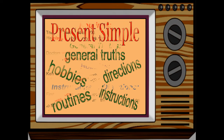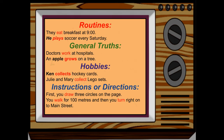For example, for routines: they eat breakfast at nine o'clock; he plays soccer every Saturday. For a general truth: doctors work at hospitals; an apple grows on a tree. For hobbies: Ken collects hockey cards; Julie and Mary collect Lego sets.